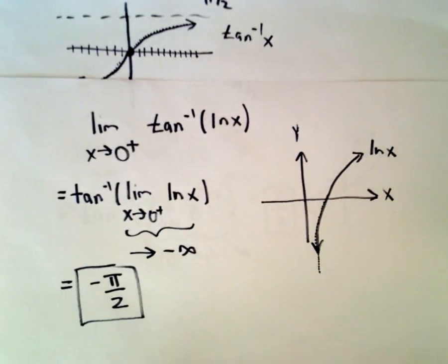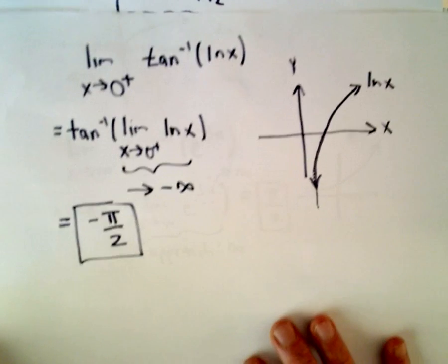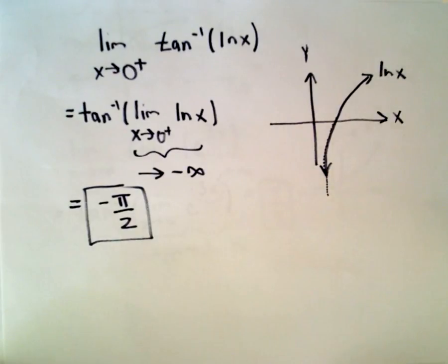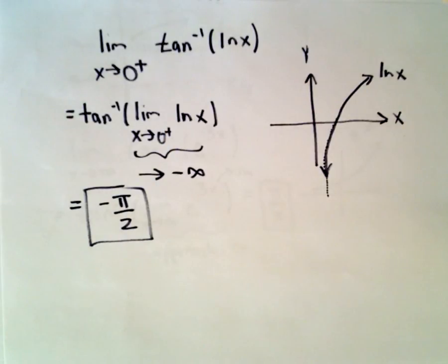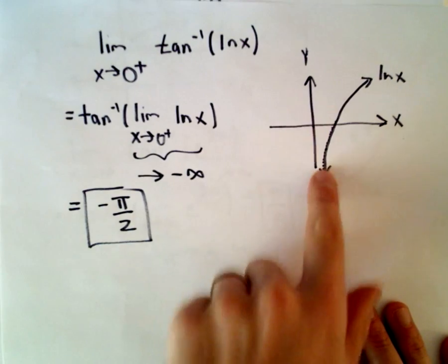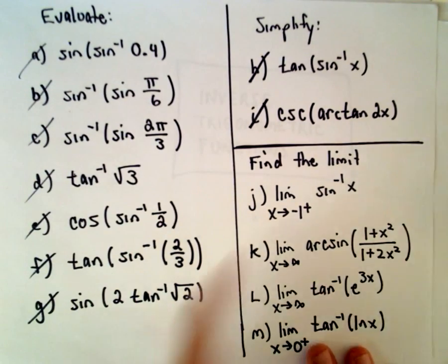That's all there is to it. Doing limits quickly comes down to reminding yourself of the graphs. These examples cover the basics of inverse trig functions. If you can just remember the basic graphs of sine, cosine, and tangent, it's relatively easy to get the graphs of the inverse functions — just switch x and y coordinates. From there, limit problems are just a matter of knowing the graphs, and evaluation problems come down to knowing the unit circle or using right triangles.